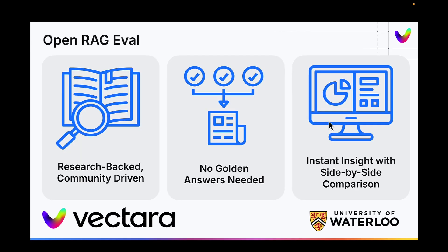So what is OpenRagEval? It's an open source project that is aiming to solve one of the major problems of RAG evaluation — the fact that you require golden answers or golden chunks to do anything, which is really non-scalable. It is research-backed, so it's work that we've done in collaboration with the University of Waterloo, the Jimmy Lin lab specifically. And let me show you how it works.